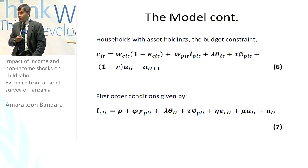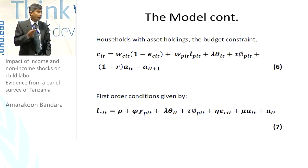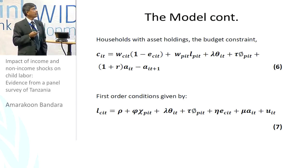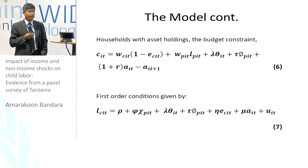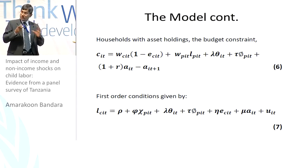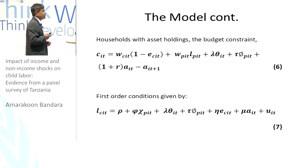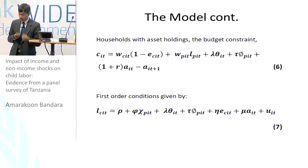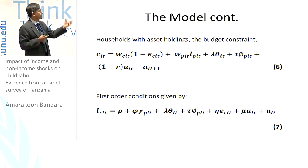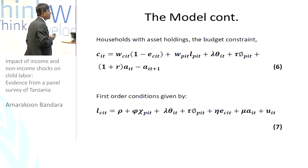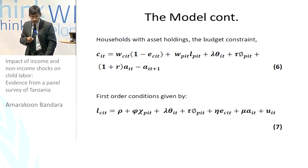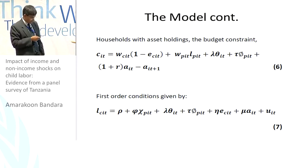The second aspect we examine is how the household behaves if it has access to assets. The budget constraint is slightly different here, where the household has financial assets from which it derives a certain level of income. The first-order condition also changes to reflect that, as in model seven.